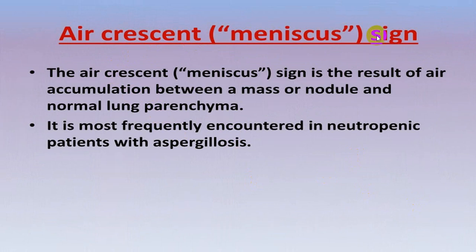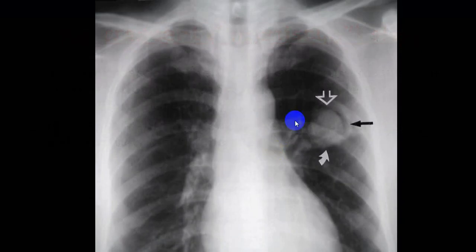The air crescent sign or meniscus sign: a radiolucent crescent is seen as a result of air accumulated between a mass or nodule and normal lung parenchyma. This is very frequently seen in aspergillosis, particularly in a cavity — forming an aspergilloma. You can see the radiopaque shadow with a surrounding black crescent line — this is a very characteristic sign.